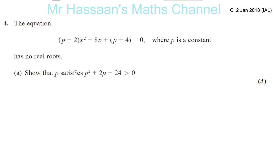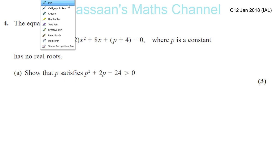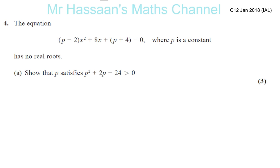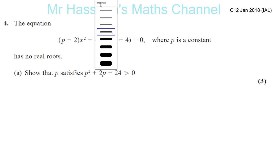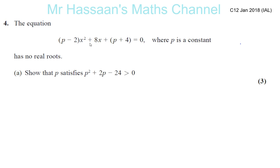So here we have a quadratic equation — something x squared plus something x plus something equals 0. It's in the form ax squared plus bx plus c equals 0, where a is p minus 2, b is 8, and c is p plus 4.